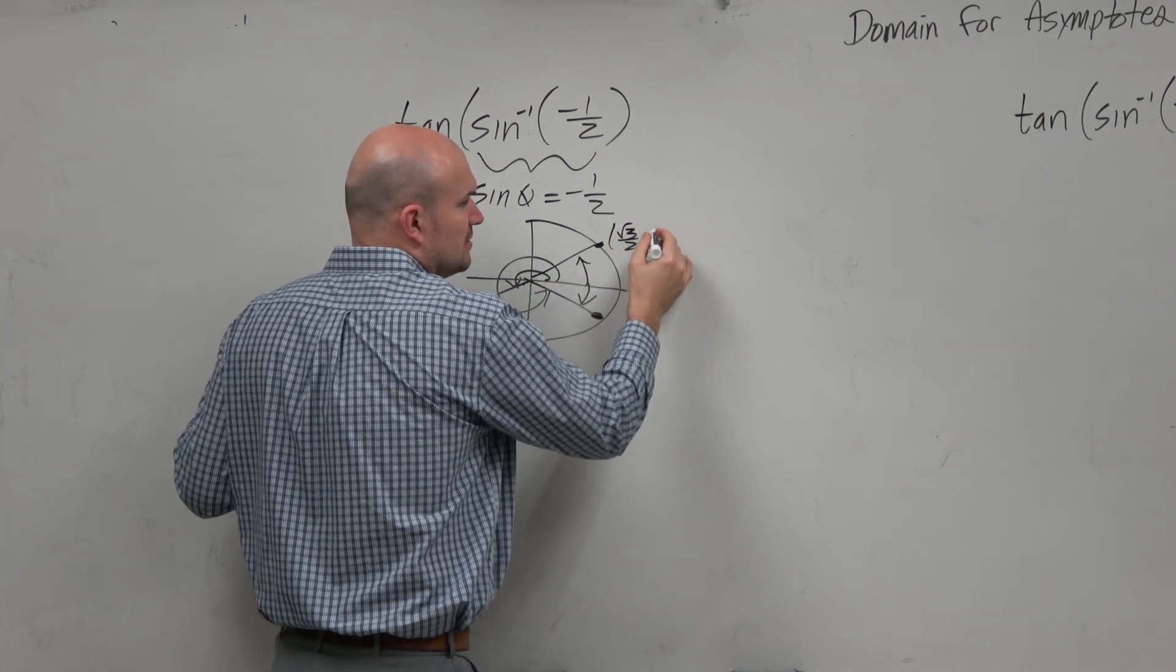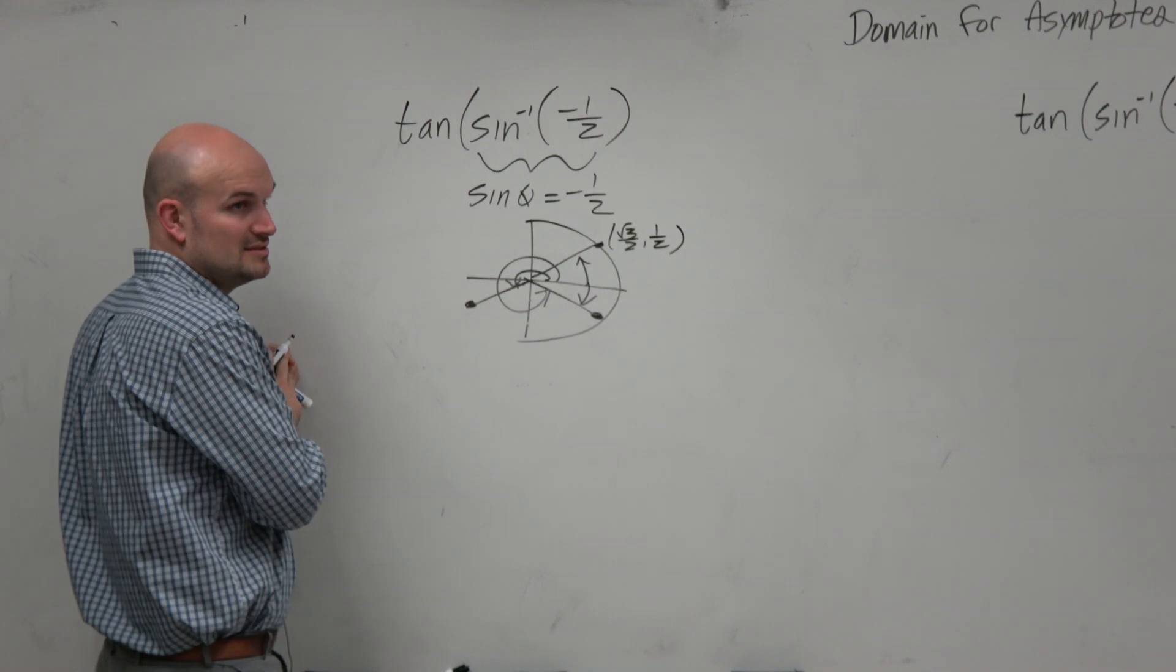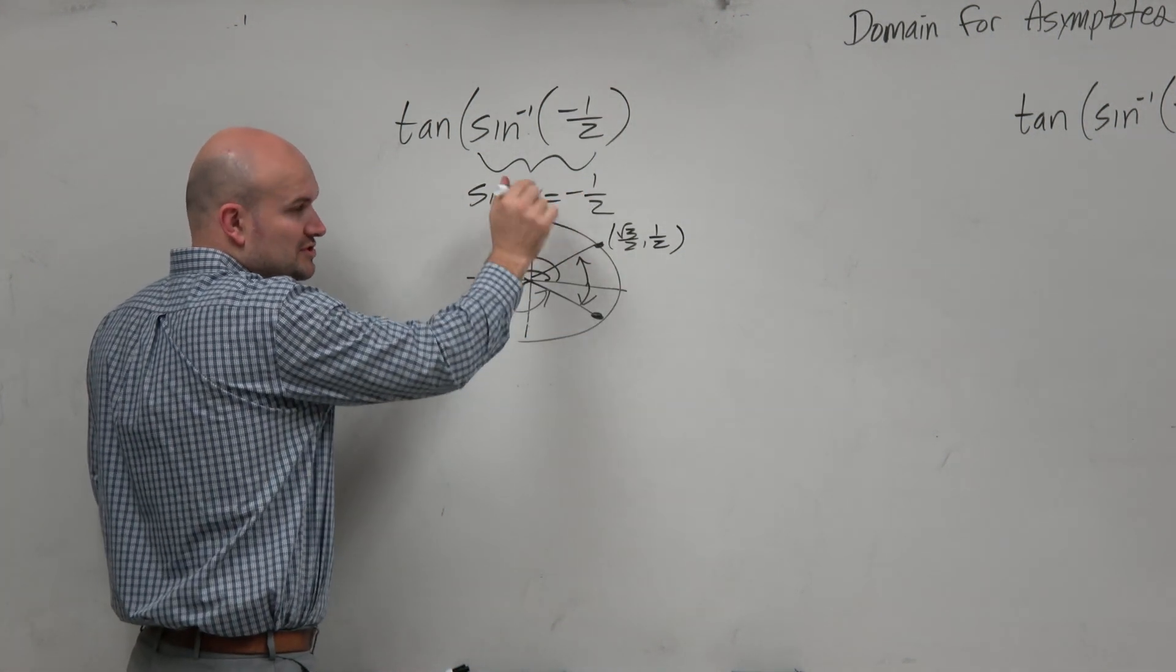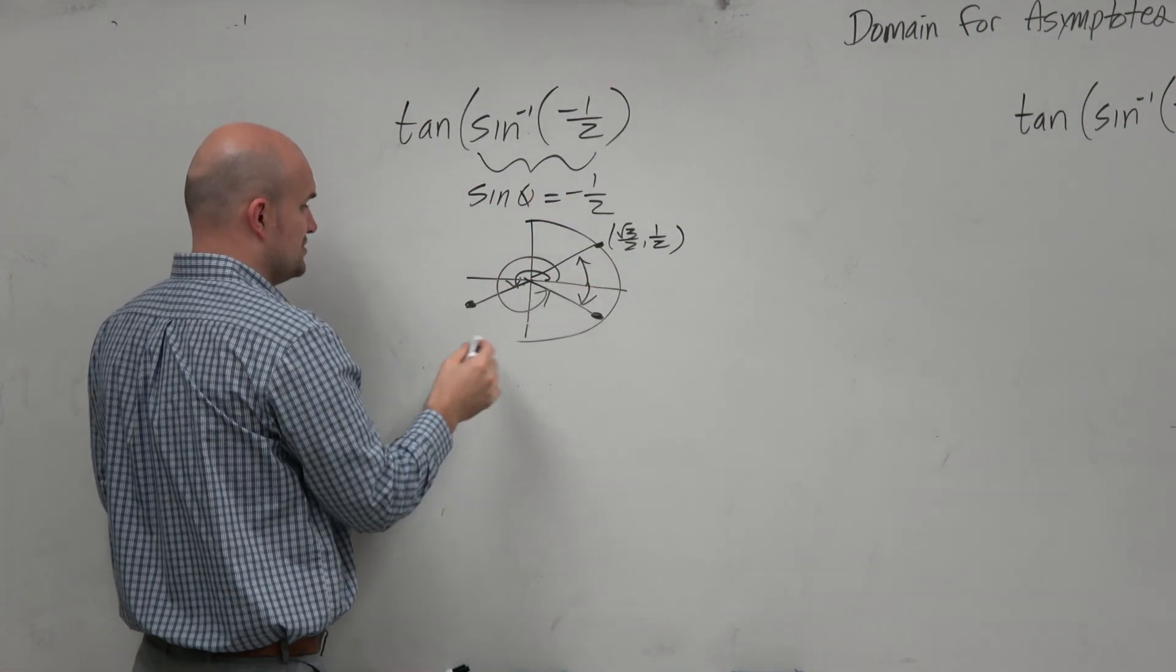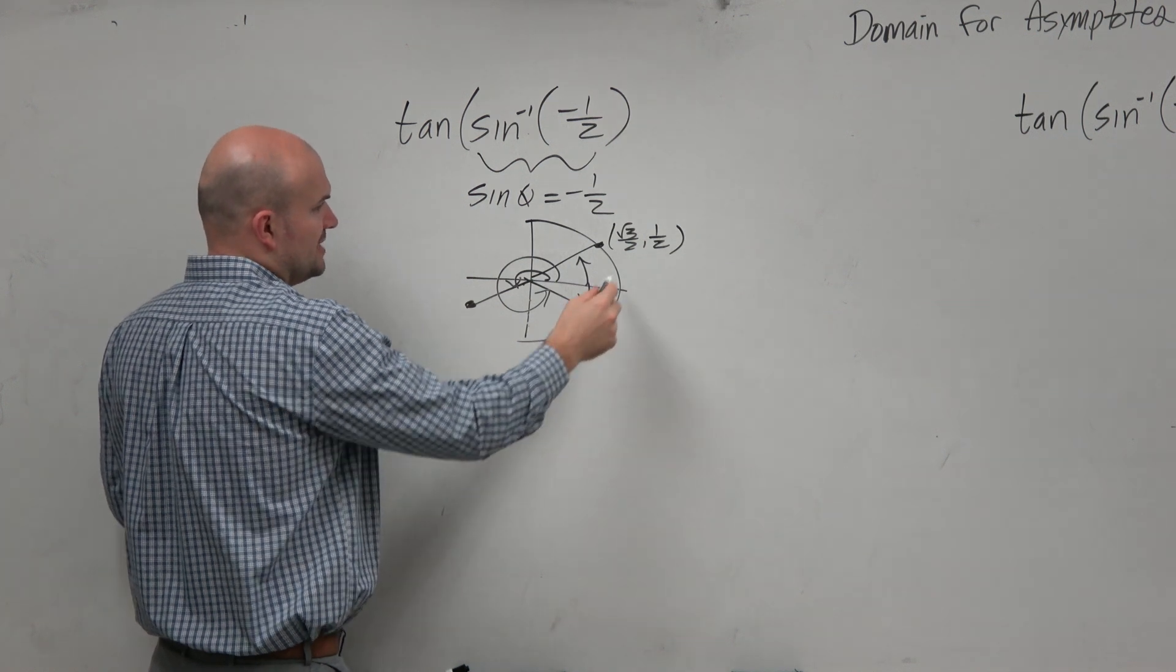Pi over 6. But I don't want the positive version, I need the negative version. So that's equal to negative pi over 6. Now I'm taking the tangent of negative pi over 6.